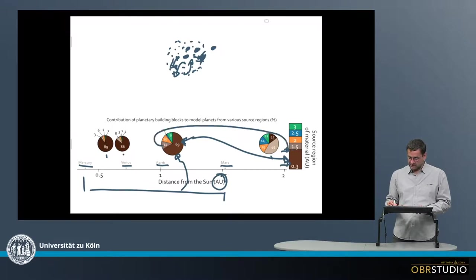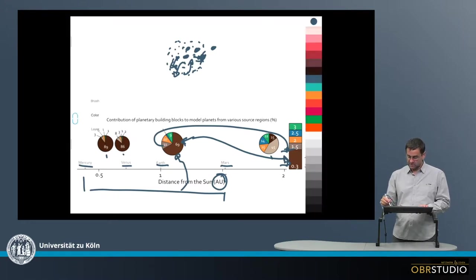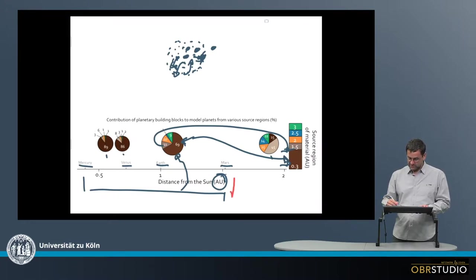Then 11 percent come from 1.5 to 2 astronomical units, so this 11 percent might come from sort of this distance here.